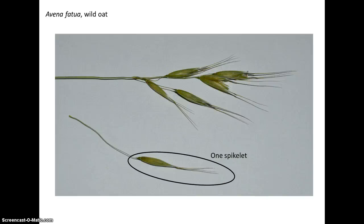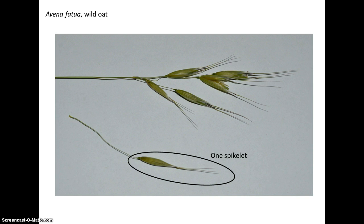The main unit of an inflorescence includes much more — it includes a lot of bracts, or modified leaves. The basic unit of an inflorescence is called a spikelet. A spikelet will have two bracts called glumes at the base, and then inside the glumes, wrapped around each other, you'll have one or more florets. A floret is a flower with two more bracts, called the lemma and the palea. The lemma and the palea surround the flower — that's a floret.